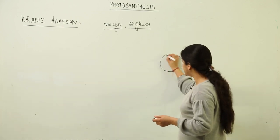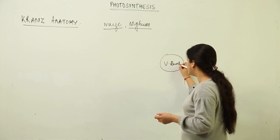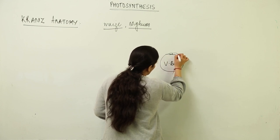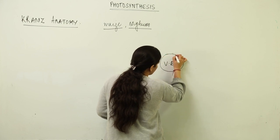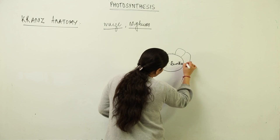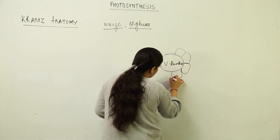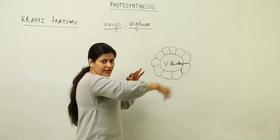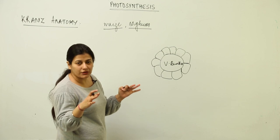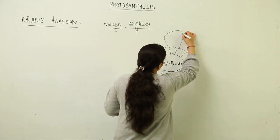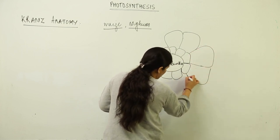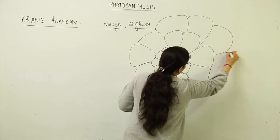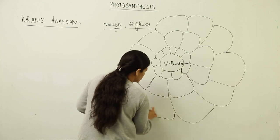In the case of Kranz anatomy, we have vascular bundles containing xylem and phloem. There is a wreath-like arrangement of cells surrounding the vascular bundles, known as bundle sheath cells. Outside the bundle sheath cells, the mesophyll is not divided into palisade or spongy; instead, there are concentric mesophyll cells arranged around the bundle sheath.